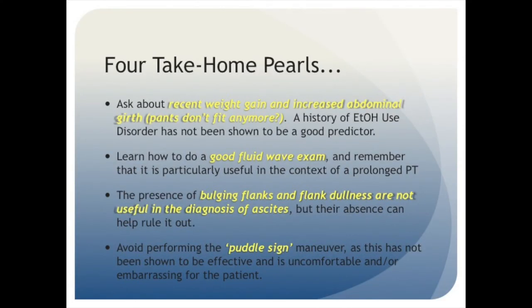To conclude, let's talk about four take-home pearls from today's video. First, remember that when you're estimating your pre-test probability, the prevalence of a condition in the community you're working with and your patients presenting symptoms and medical history factor heavily into what your pre-test probability is going to be. In the study that we looked at earlier with the VA patients, recent weight gain and recent increased abdominal girth, like their pants don't fit anymore, ended up being the most predictive of their patients having ascites.